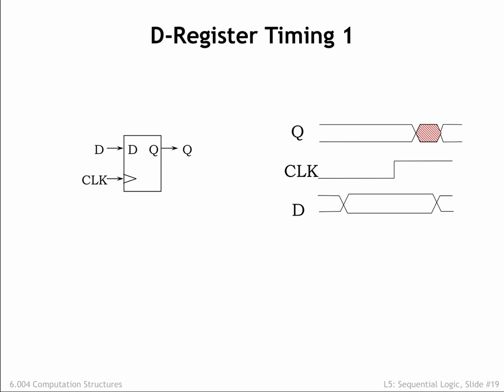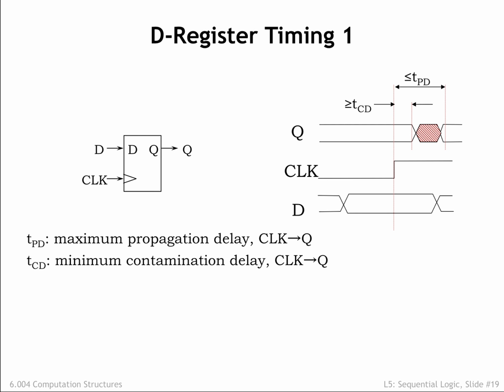Here's a summary of the timing specifications for a D register. Changes in the Q signal are triggered by a rising edge on the clock input. The propagation delay TPD of the register is an upper bound on the time it takes for the Q output to become valid and stable after the rising clock edge. The contamination delay TCD of the register is a lower bound on the time the previous value of Q remains valid after the rising clock edge. Note that both TCD and TPD are measured relative to the rising edge of the clock. Registers are designed to be lenient in the sense that if the previous and new value of Q are the same, the stability of the Q signal is guaranteed during the rising clock edge. In other words, the TCD and TPD specifications only apply when the Q output actually changes.